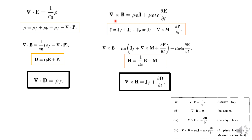Now for the fourth Maxwell equation — Ampere's law with Maxwell's correction — del cross B equals mu 0 J plus mu 0 epsilon 0 dou E by dou T, where J is the total current density equal to J_F (free current density) plus J_B (bound current density, which is del cross M) plus J_P (polarization current density, which is dou P by dou T).